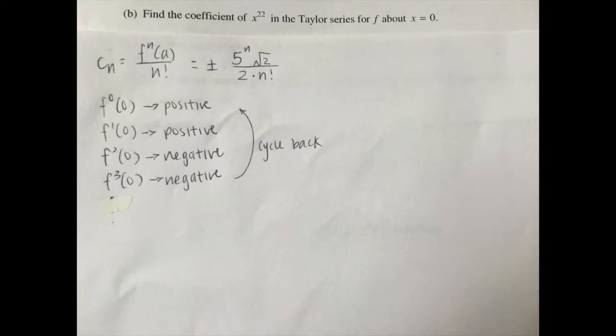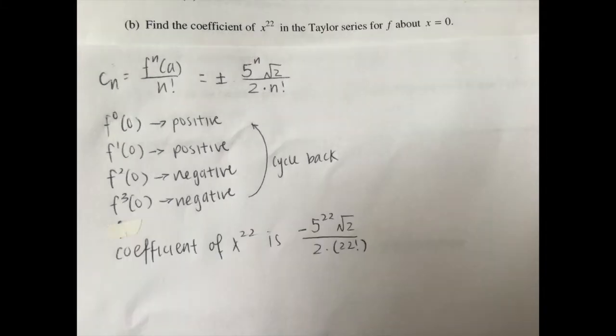f of 0 is positive. The first derivative of f at 0 is positive. The second derivative of f at 0 is negative. And the third derivative of f at 0 is negative as well. And then it cycles again to positive, positive, negative, negative, and so on and so forth. When you're finding the sign, make sure you remember that the pattern starts off with f of 0, not the first derivative of f at 0. Using that, you would find that the coefficient of x to the power of 22 is negative 5 to the power of 22 times square root of 2 all divided by 2 times factorial of 22.